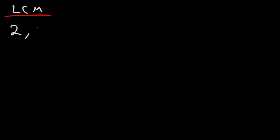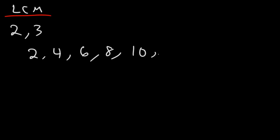Let's say if we want to find the least common multiple of two numbers. We'll keep it simple: two and three. What is the LCM of two and three? Well let's write out the multiples of two. Multiples of two are two, four, six, eight, ten, twelve, and so forth.